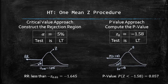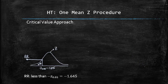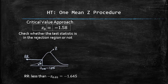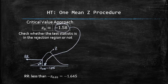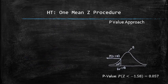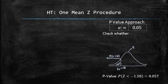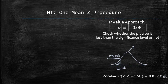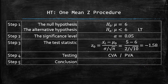Next, we are going to decide whether to reject or not reject the null hypothesis. In the critical value approach, we must check whether the test statistic is in the rejection region or not. Our test statistic is negative 1.58, and it is to the right of the critical value of negative 1.645. Thus, it is not in the rejection region. In the p-value approach, our p-value is 0.057, and it is greater than alpha. Both tests suggest that we do not reject the null hypothesis in favor of the alternative.